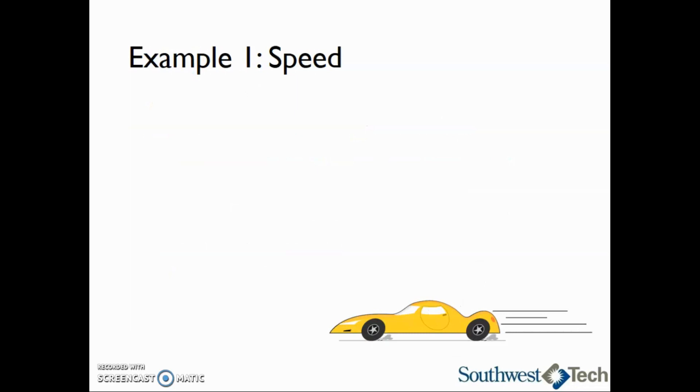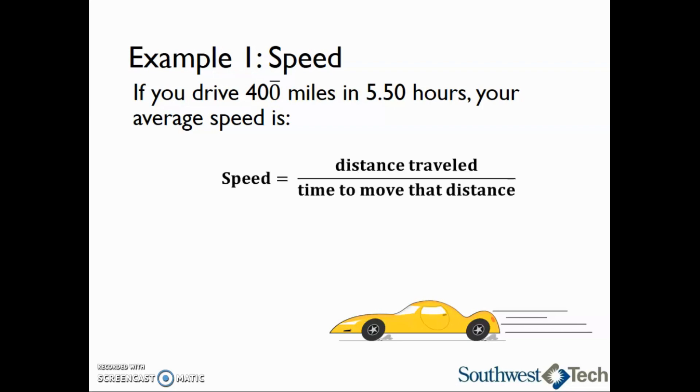Let's take a look at an example calculating speed. If you drive 400 miles in 5.5 hours, your average speed is what? The equation to calculate speed is distance traveled divided by the time to travel that distance. Substituting the given data, we see that speed is equal to 400 miles divided by 5.5 hours. After we divide, we see that rounded to three significant digits, speed is equal to 72.7 miles per hour.